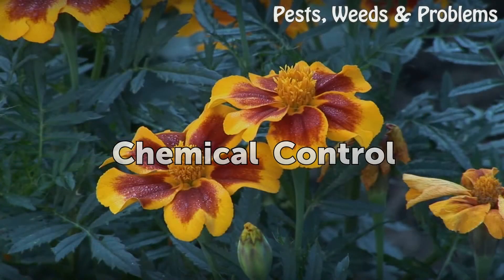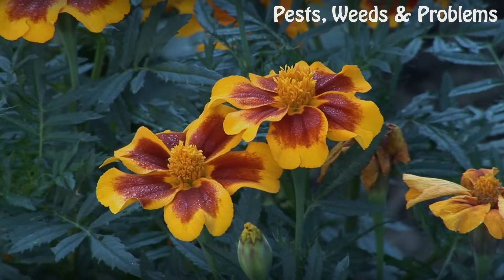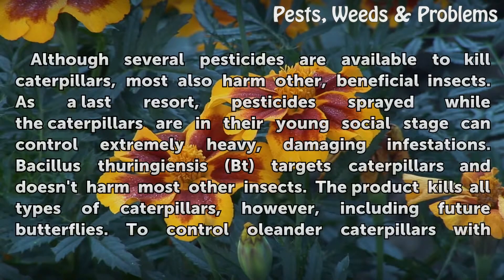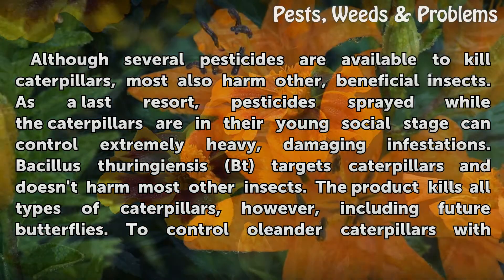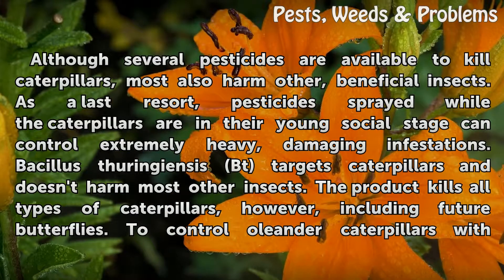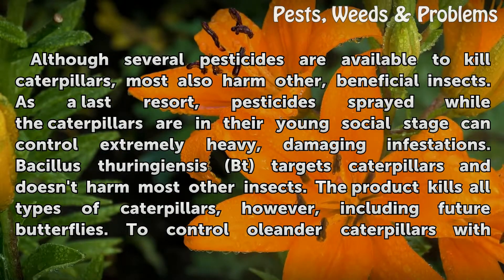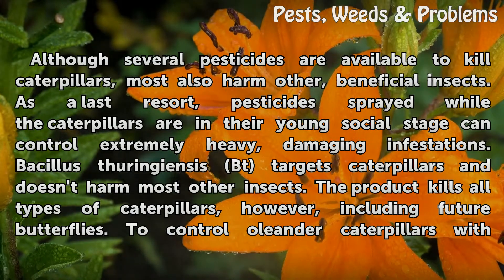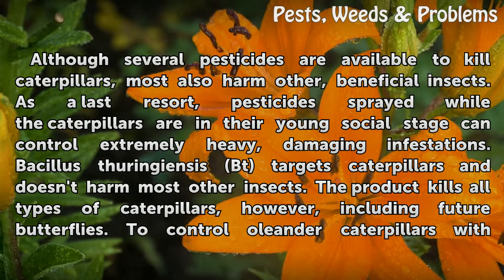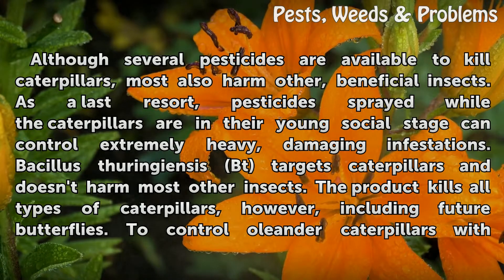Chemical Control. Although several pesticides are available to kill caterpillars, most also harm other beneficial insects. As a last resort, pesticides sprayed while the caterpillars are in their young social stage can control extremely heavy, damaging infestations. Bacillus thuringiensis (Bt) targets caterpillars and doesn't harm most other insects. The product kills all types of caterpillars, however, including future butterflies.